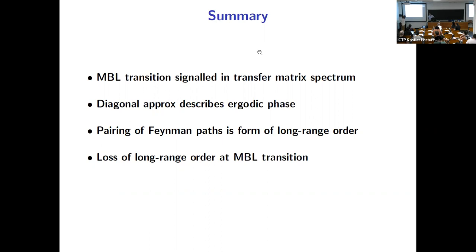The question is what happens if you think about time crystals in the language of the spectral form factor. Time crystals do have a characteristic feature in the spectrum of the evolution operator, but it's to do with correlations between eigenvalues on opposite sides of the unit circle. So the kind of transfer matrix approach to the spectral form factor I was talking about wouldn't particularly shed light on that, but perhaps you could devise a different kind of transfer matrix that would be useful.